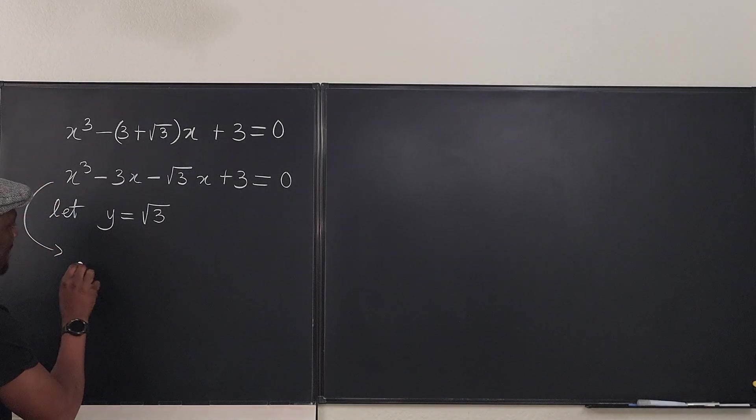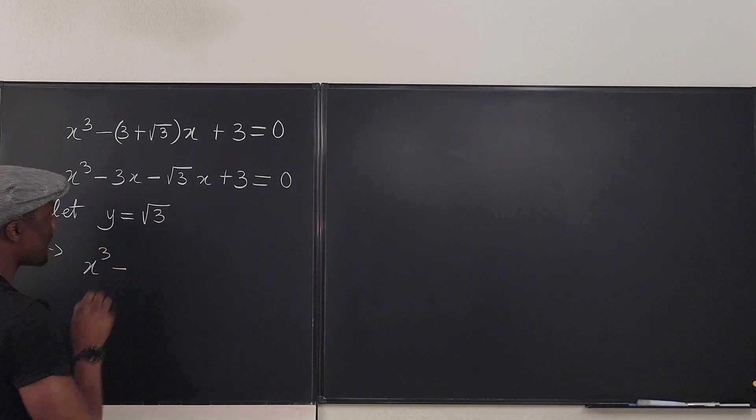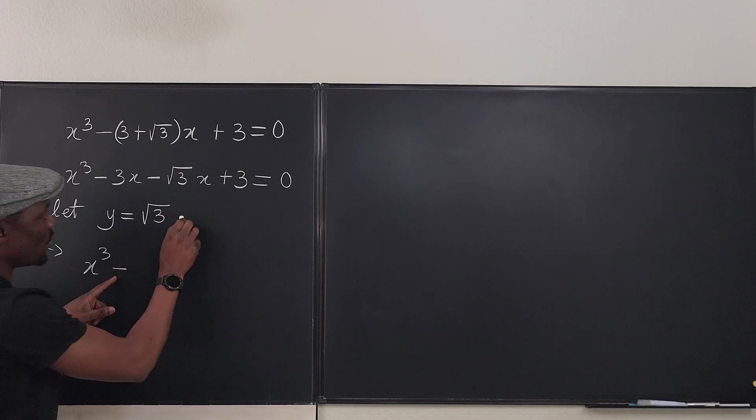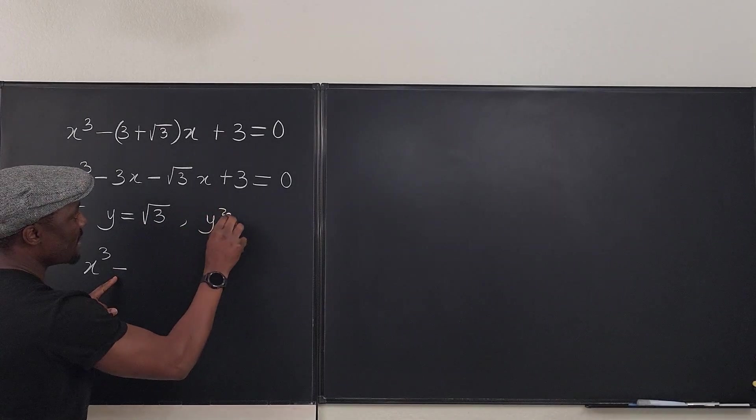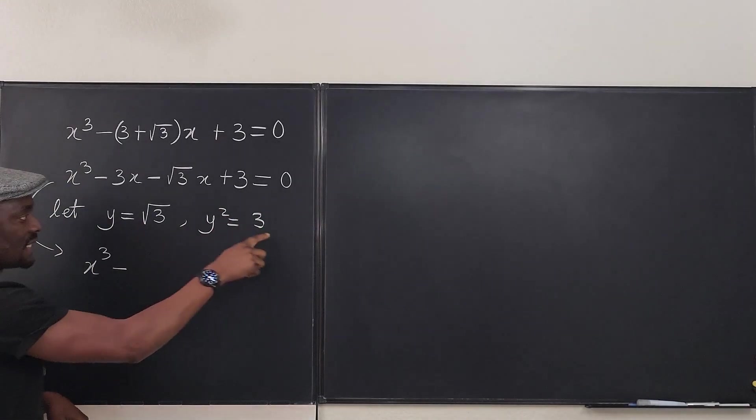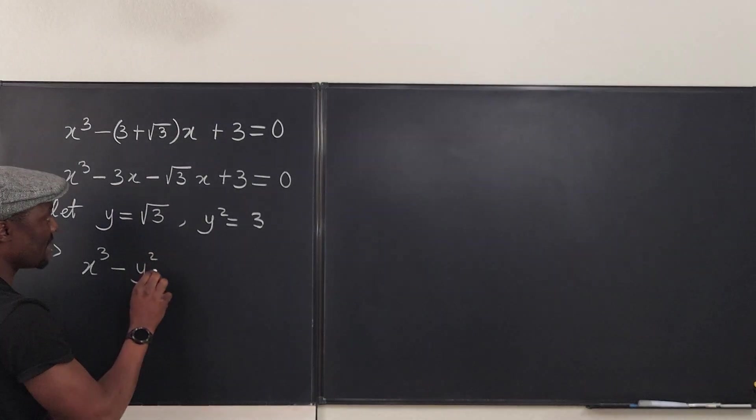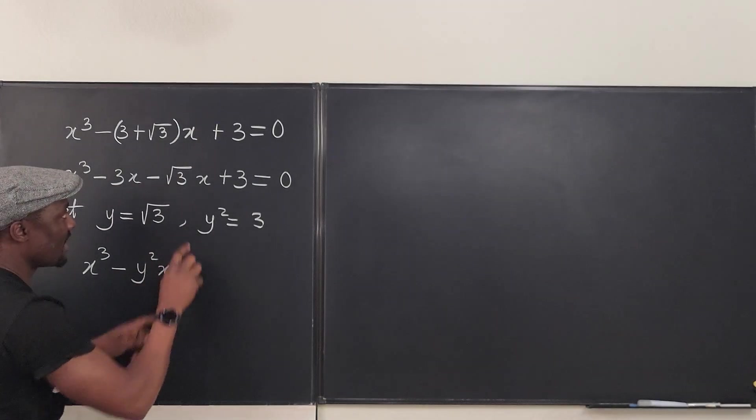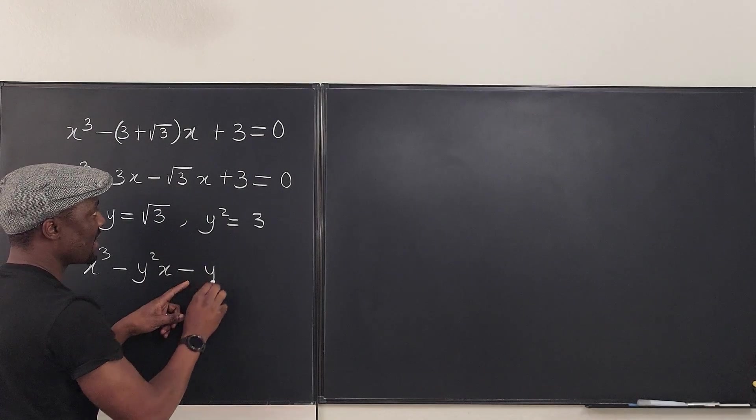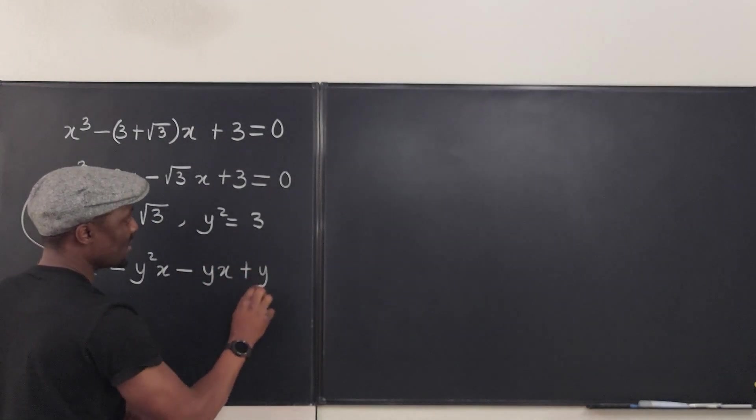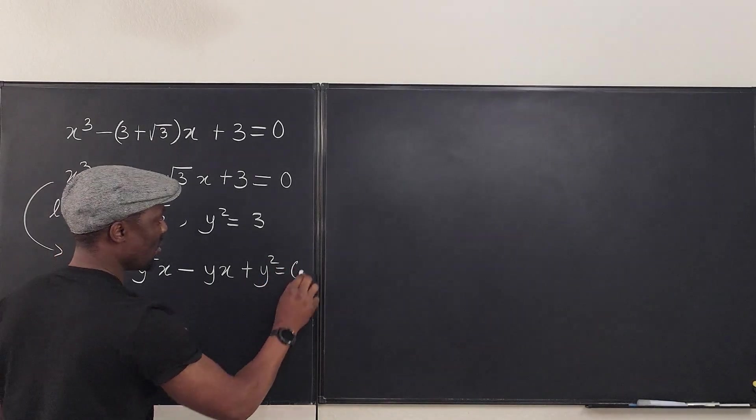So I said let y be equal to the square root of three. So watch this. Now I have this became x³ - y²x - yx + y² = 0. You see, the square root of three simply means that y² will be equal to three if I square both sides.